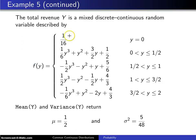And on the next page, you can see that will be a mixed discrete-continuous random variable. It is discrete with a spike at zero of one-sixteenth.